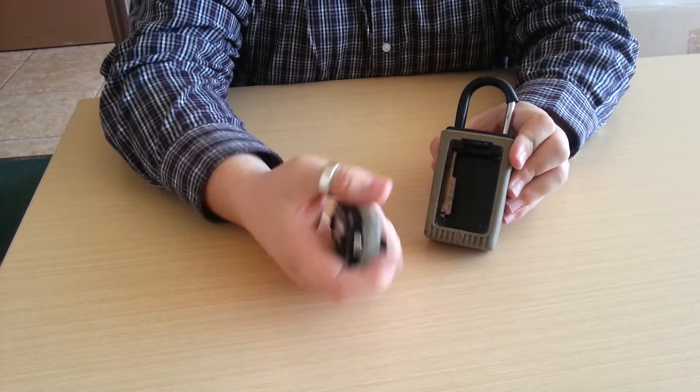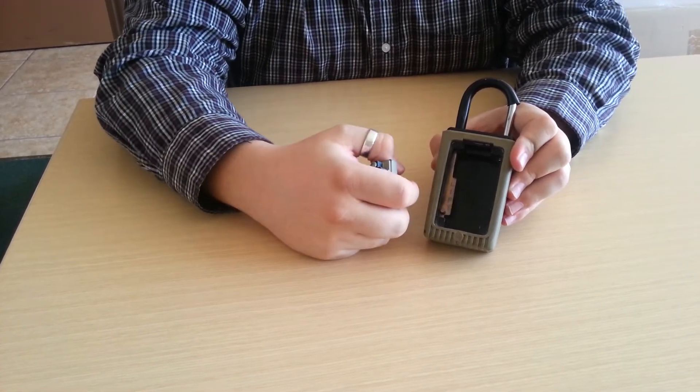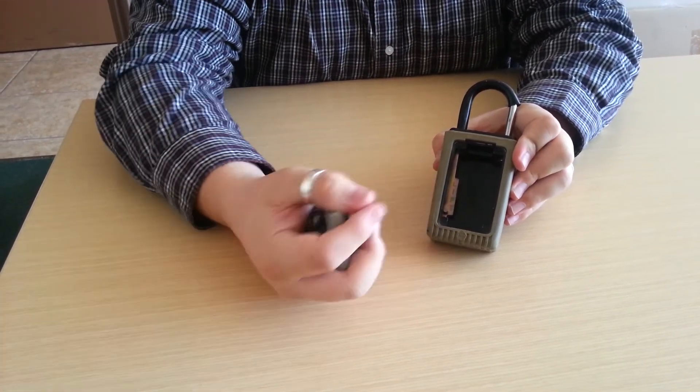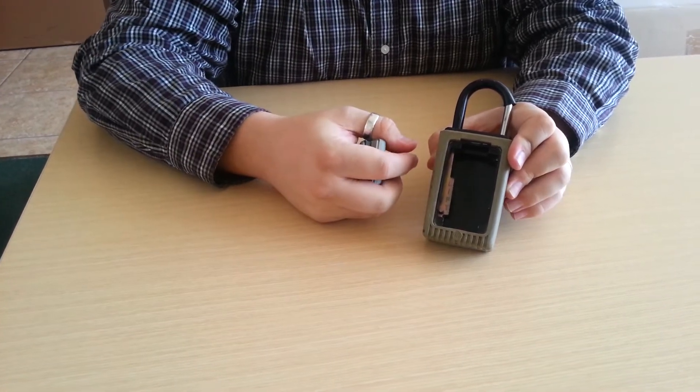So once you get that, the whole lid will come off and the key will be deposited inside of the lockbox. Remove the key, open the property, go ahead and view the property.